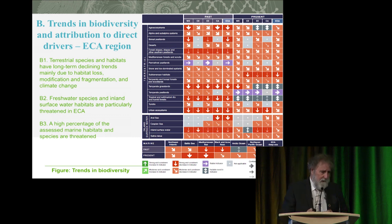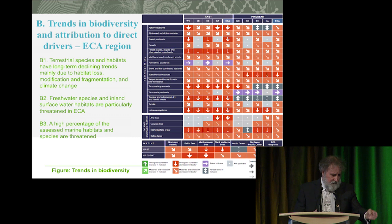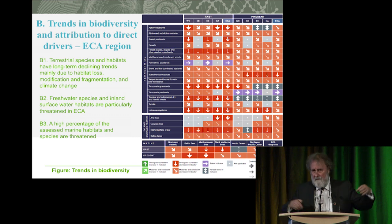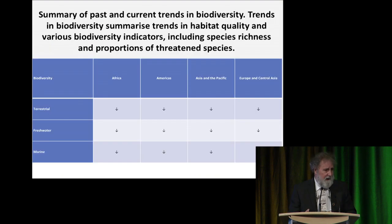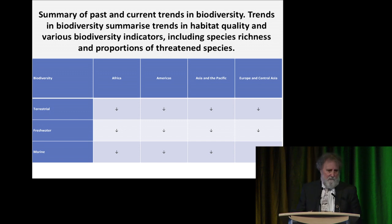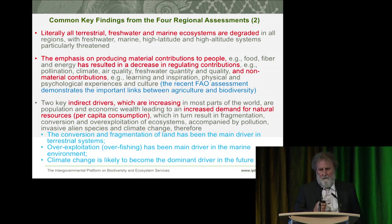Looking at biodiversity trends in the ECA region — Europe and Central Asia — we examined terrestrial systems, freshwater systems, and near-coastal marine systems across the last 50 years and the last 5 to 10 years. Fundamentally, biodiversity is going down in just about every single ecosystem and in each sub-region of ECA. Across Africa, the Americas, Asia-Pacific, and Europe and Central Asia, whether looking at terrestrial, freshwater, or marine systems, we are losing biodiversity at the genetic, species, and ecosystem level.